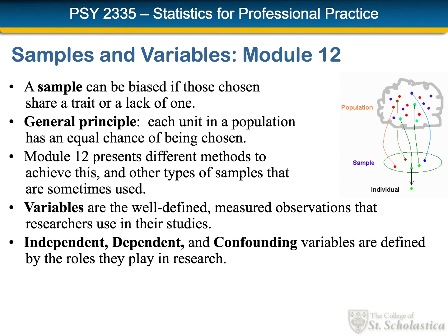Module 12 also opens the language of variables, which are well-defined, measured observations that researchers can use in their studies. We see how a variable can take the role of being an independent or predictor variable, a dependent variable — one that is influenced by the independent variable — or a confounding or extraneous variable. All of these roles depend not on the variable itself, but on the role it plays in our theory.